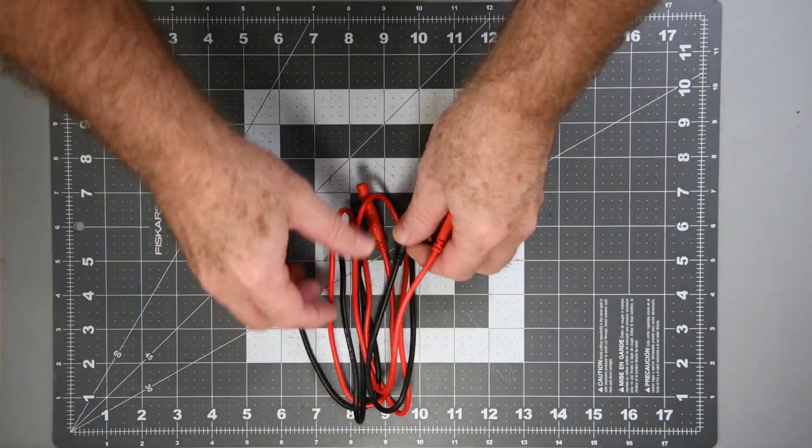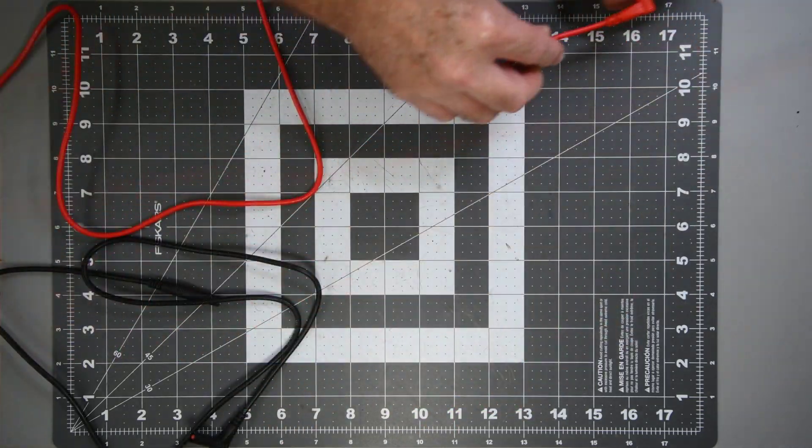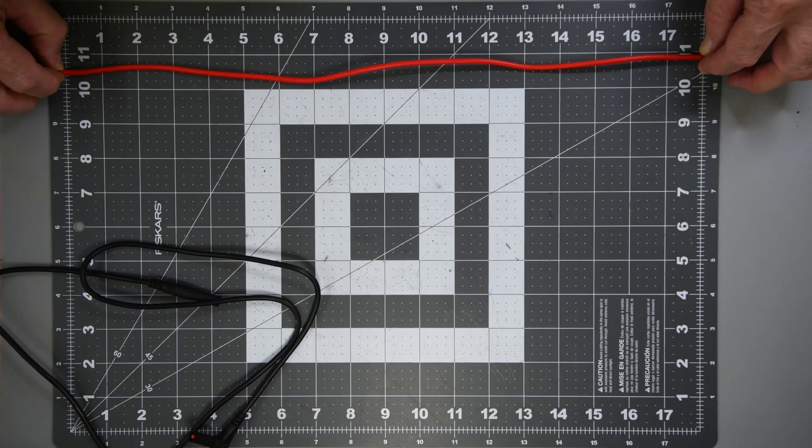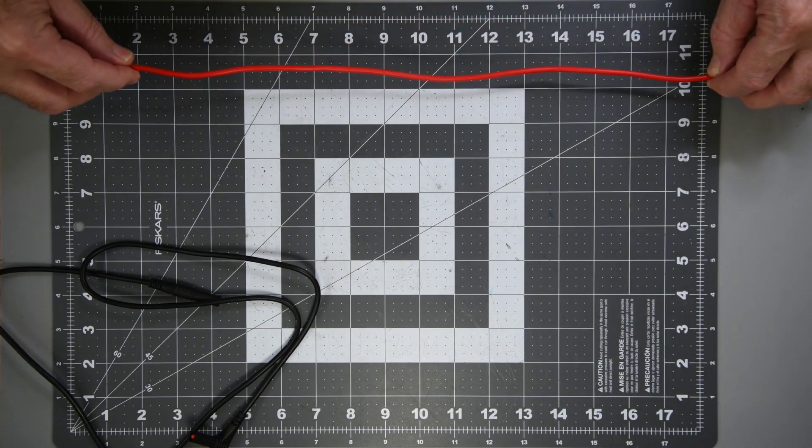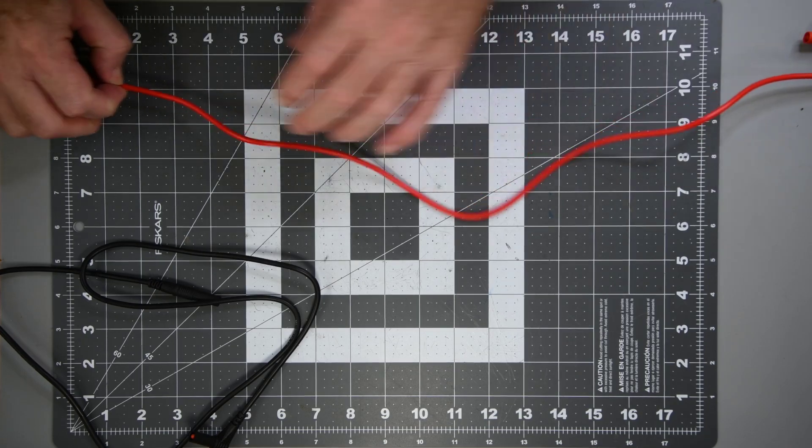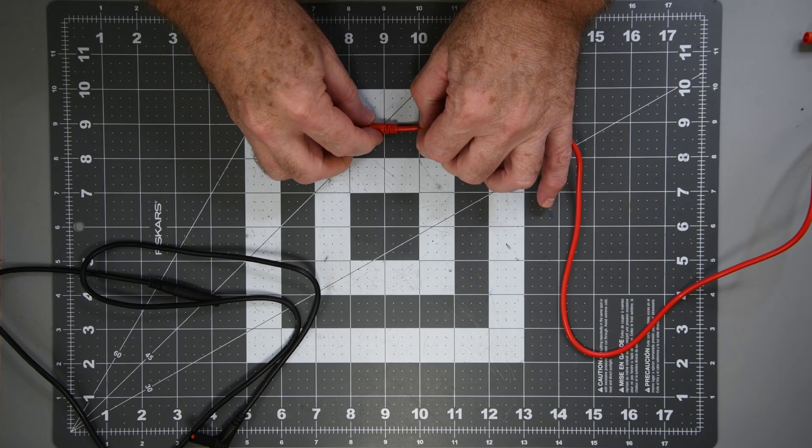First off, the leads themselves. Looks like a little over 36 inches. Strain relief to strain relief. So sort of short leads.